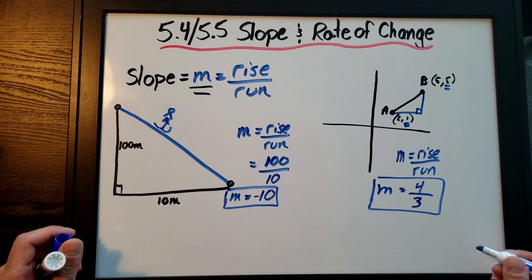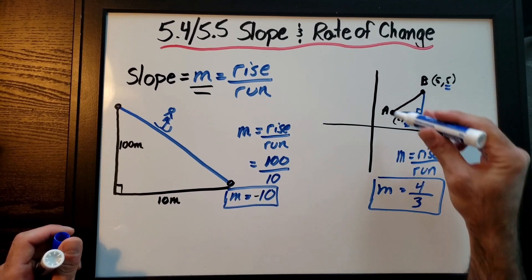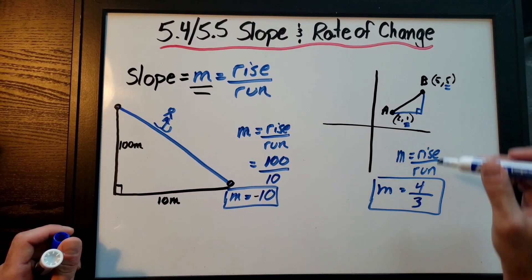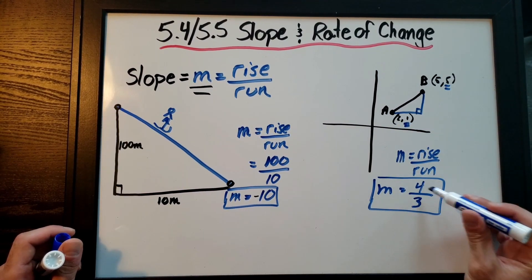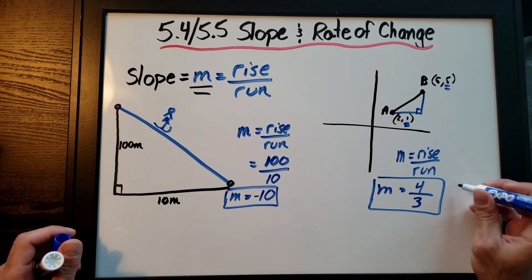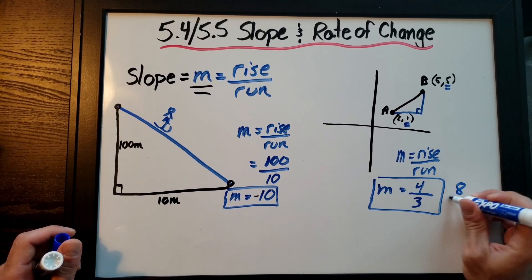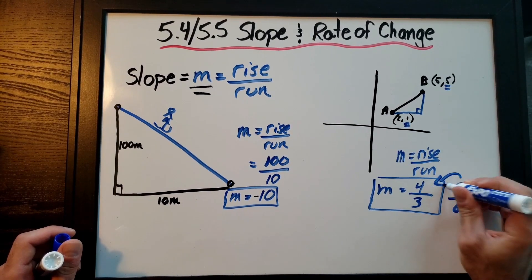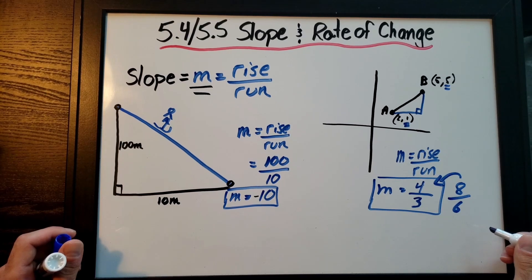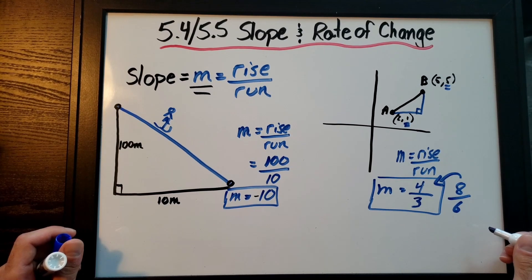From x = 2 to x = 5, the run is 3. So slope equals 4 over 3. It's straightforward — you count units up and down for rise and side to side for run, set it up as a fraction. If you get something like 8 over 6, reduce it to 4 over 3. Always express slope in simplest form.